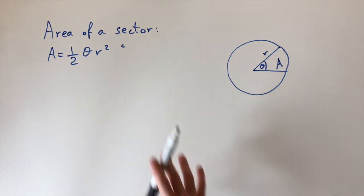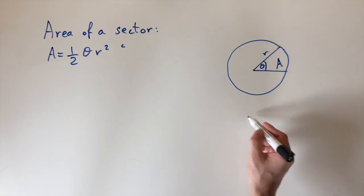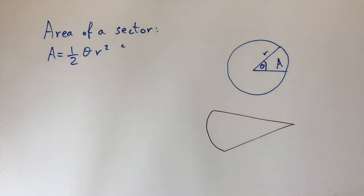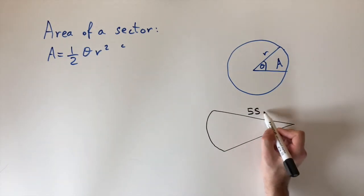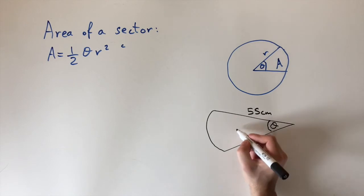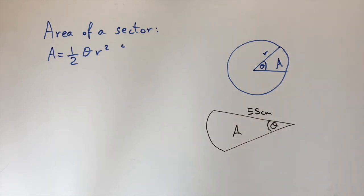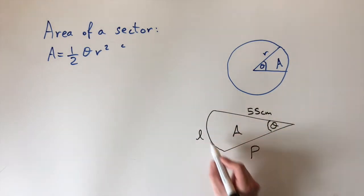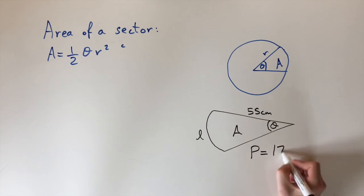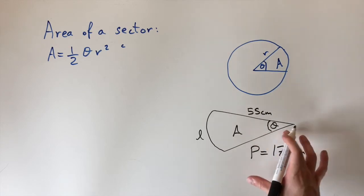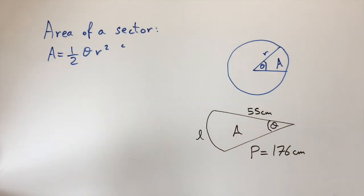For the harder example, we have a sector of a circle. The radius is 55 centimeters and there is an unknown angle theta. We're not given the arc length directly — instead, we're given the perimeter of the sector, which is 176 centimeters. We need to find the angle first, and then the area.